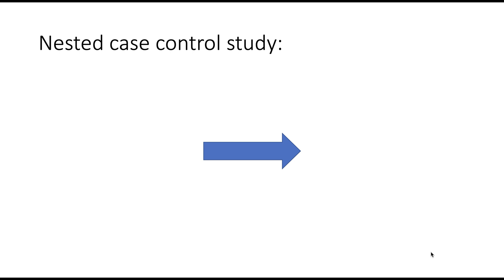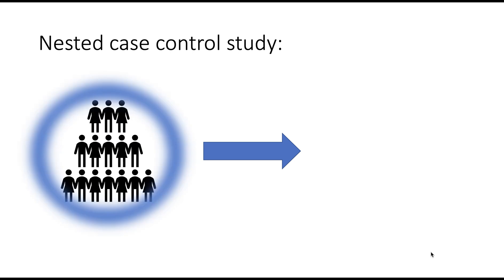In nested case-control studies, we start with a cohort of people — people with the same characteristics, for example all living in a particular village or town selected for an epidemiological study. What you do is collect any data related to these people: their sex, age, marital status, and you can even take blood samples or urine samples and keep them in freezers for further usage.